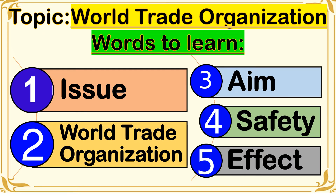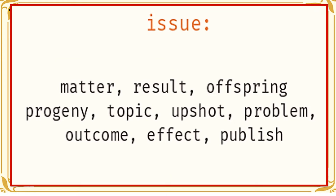Now let's study each word one by one. Issue means matter, result, topic, problem, outcome, effect, and publish. So when you say issue, it means the problem or the outcome or the effect of doing international trade.